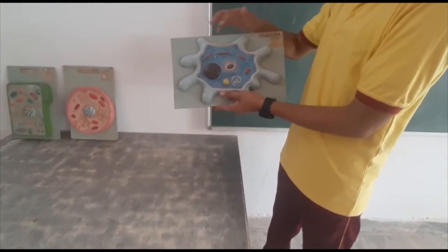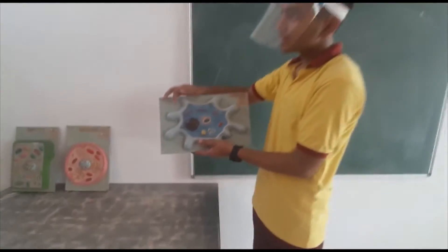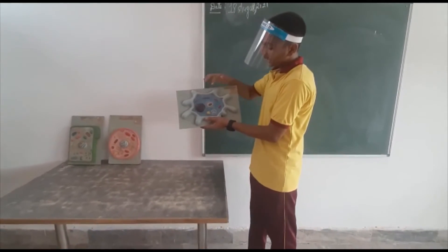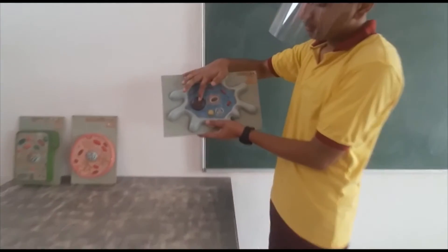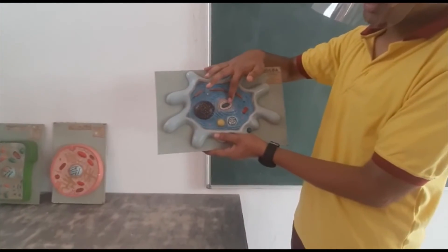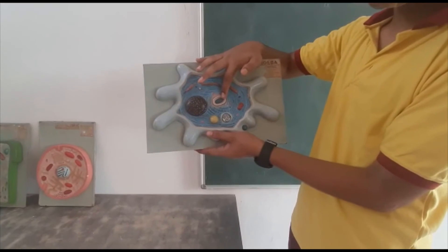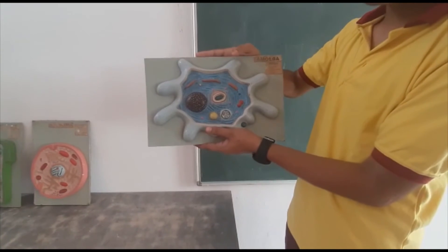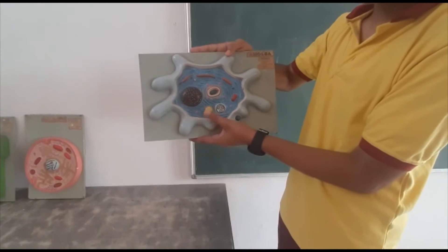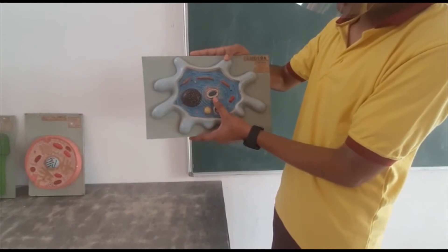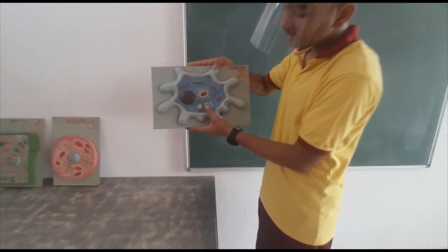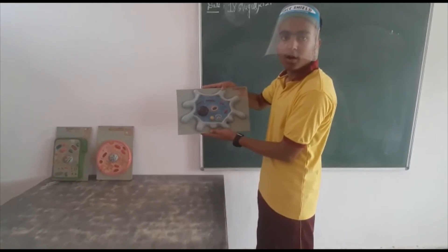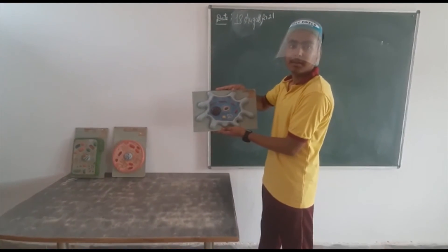This outer covering is known as the pseudopodium, and this is known as the contractile vacuole. This is known as the nucleus, which controls all the activities in the cell — it is known as the brain of the cell. And this is the food vacuole of the amoeba.